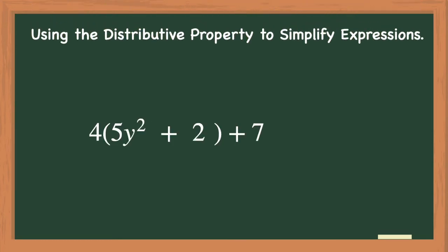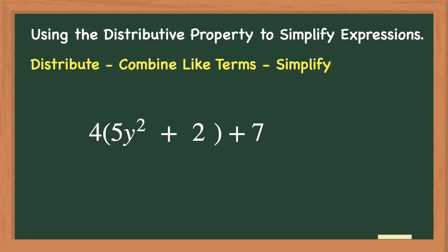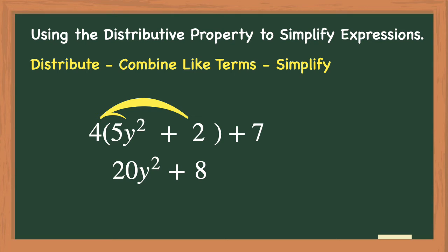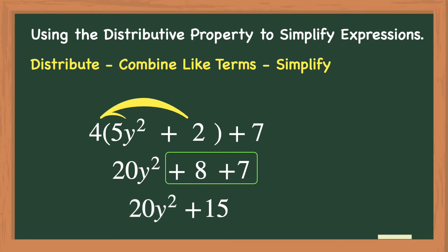So how do you use the distributive property to simplify expressions? The first step is to distribute, then combine all the like terms, and then simplify. Our first step will be to distribute the factor of 4 to both 5y squared and positive 2. Doing this will give us 20y squared plus positive 8. We drop the parentheses because we have completed the distributive property by multiplying the factor of 4 to each term inside the parentheses only. Next we bring down the positive 7 and combine the like terms of positive 8 and positive 7. This gives us positive 15. Then we bring down the 20y squared, and our simplified expression is 20y squared plus 15, which is correct.